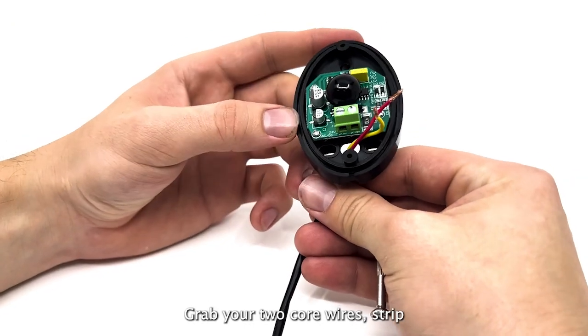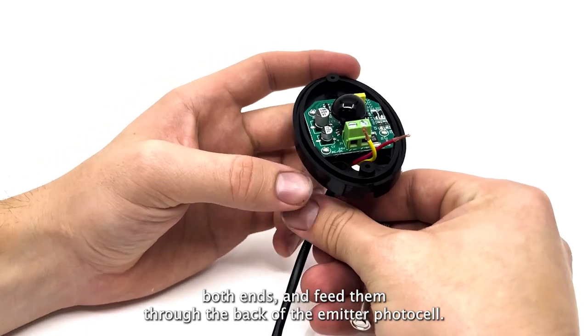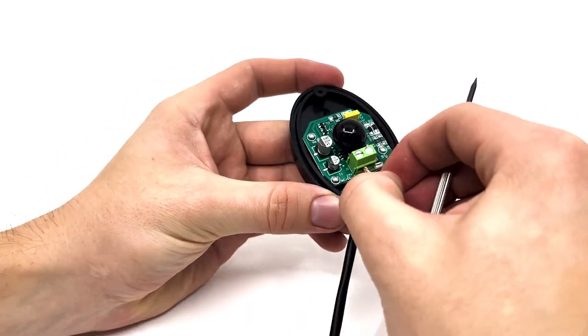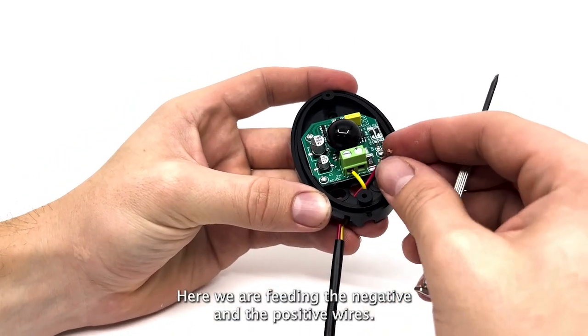Grab your two core wire, strip both ends and feed them through the back of the emitter photocell. Here we are feeding the negative and the positive wires.